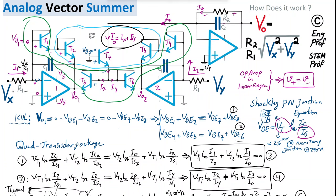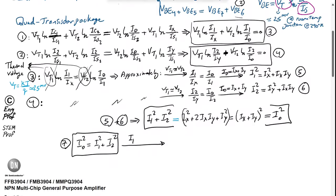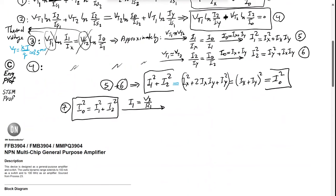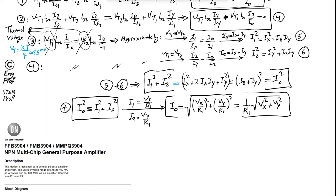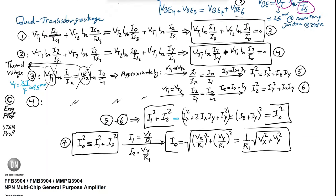Taking the square root of both sides: Iout = √((Vx/R1)² + (Vy/R1)²) = (1/R1) · √(Vx² + Vy²). This confirms the circuit is performing analog vector summation.